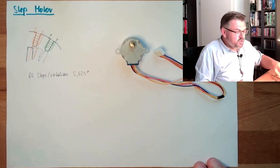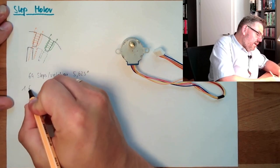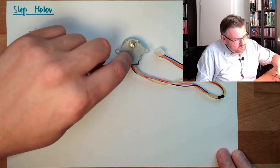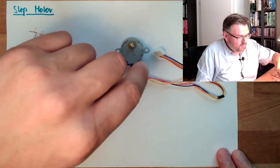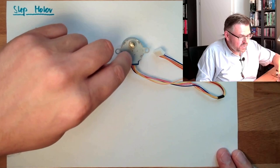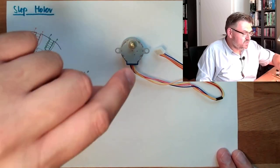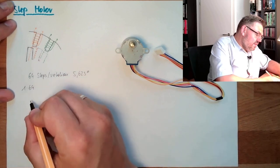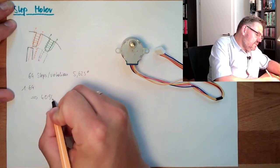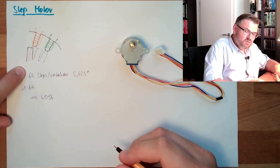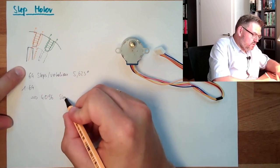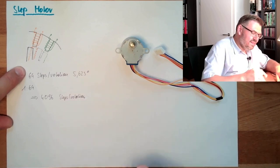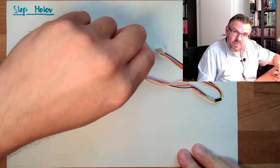The gearbox ratio is 1 divided by 64. So if the internal part is doing 64 rotations, the external part is only doing one. So externally, it looks like we have 4096, 64 times 64 steps per rotation. This is really tiny. You can only feel it at the beginning.